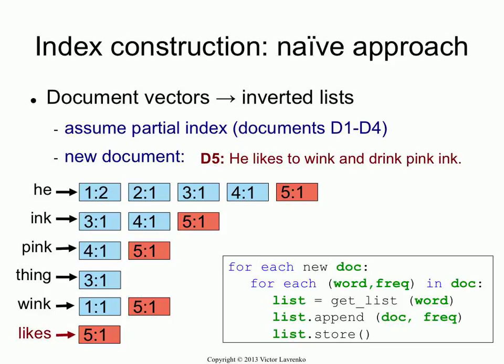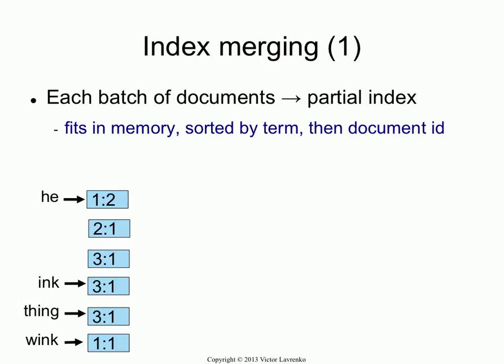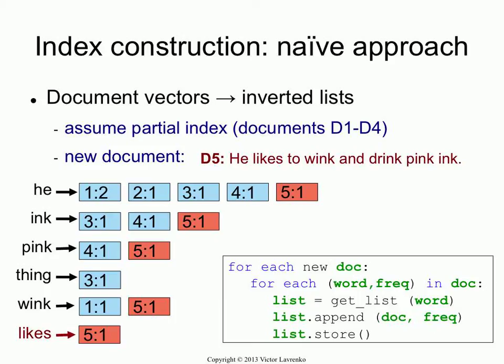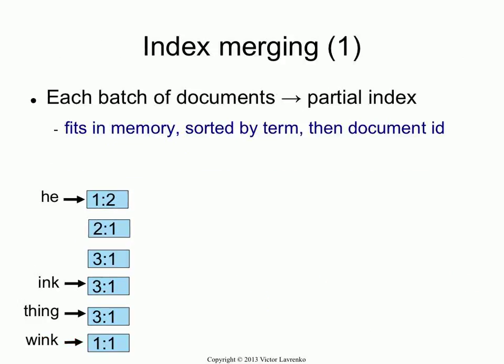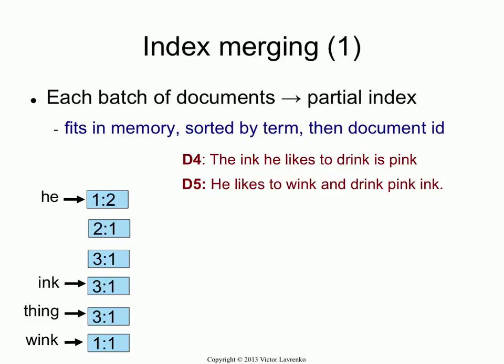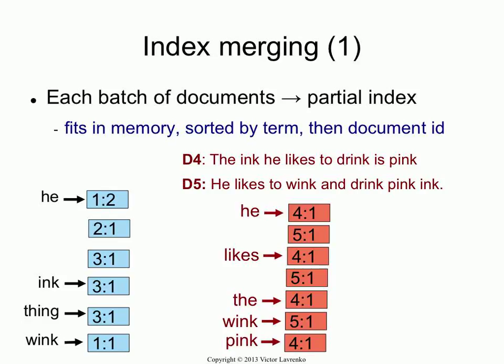So what can you do? The solution is index merging. Instead of keeping one huge index and updating it incrementally every time a document arrives from the crawler, you index documents in batches. The batch should be small enough to handle in memory — a million documents you could easily do in memory, but 10 billion you can't. So you take a batch, construct a partial index from it, then another batch comes in and you build another index.